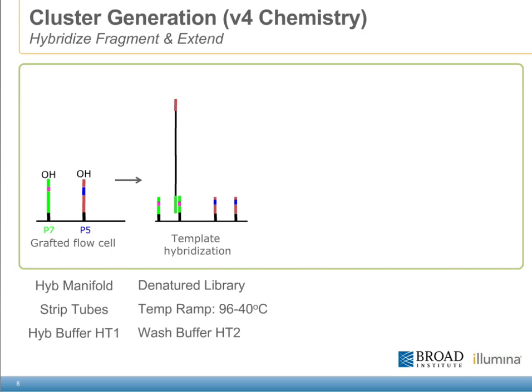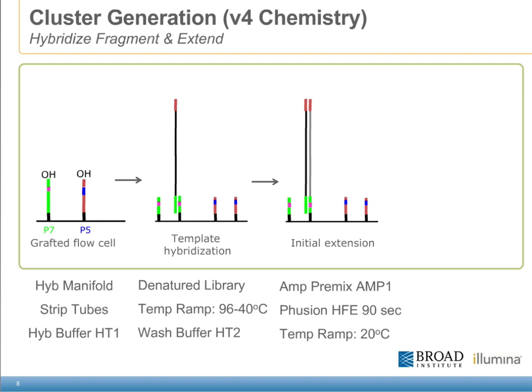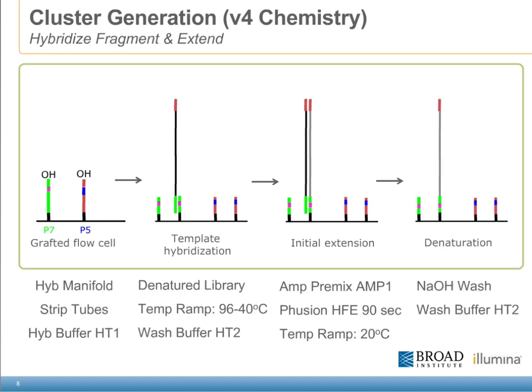Once we've pre-washed the flow cell with the hive buffer, we add our denatured library. We ramp the temperature from 96 degrees down to 40 degrees to allow all of the denatured library fragments to find a complement on the surface of the flow cell. After hybridization time, we wash away any unbound library using wash buffer HT2. We then flow in amplification premix followed by fusion enzyme, which copies the template strand to the flow cell. We immediately ramp to 20 degrees to eliminate any exonuclease activity of the fusion enzyme, then wash with sodium hydroxide to denature any residual fusion, and rinse away with wash buffer.